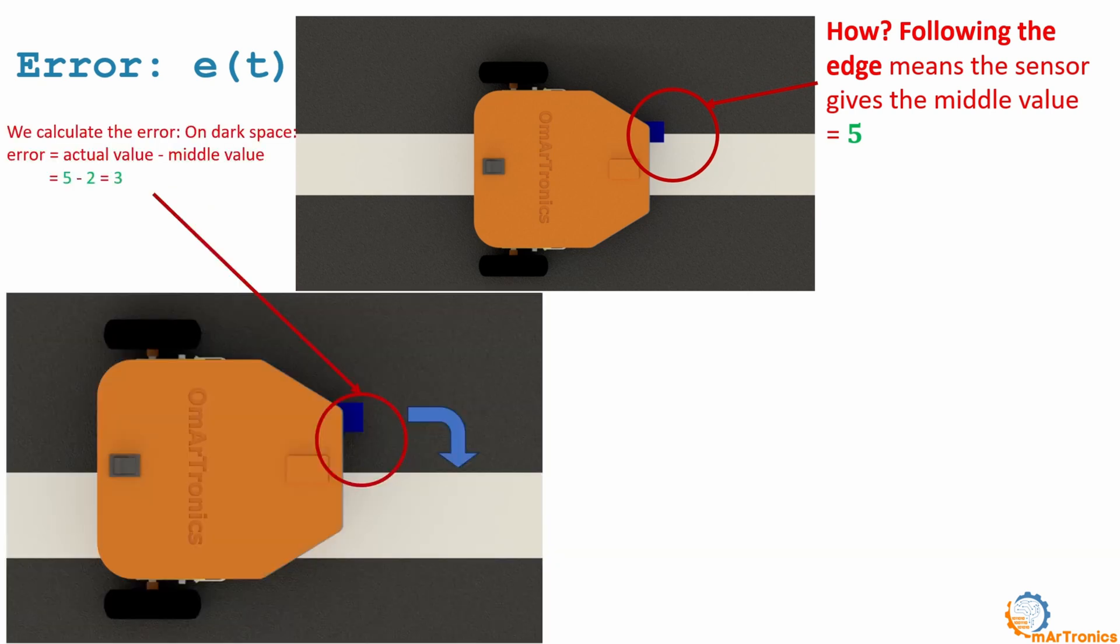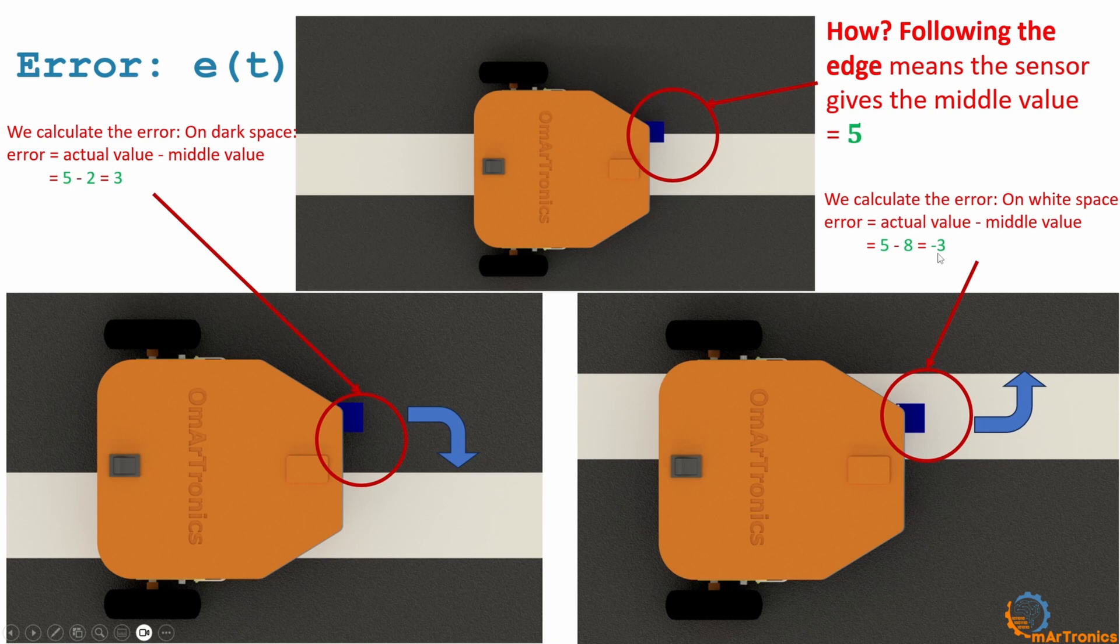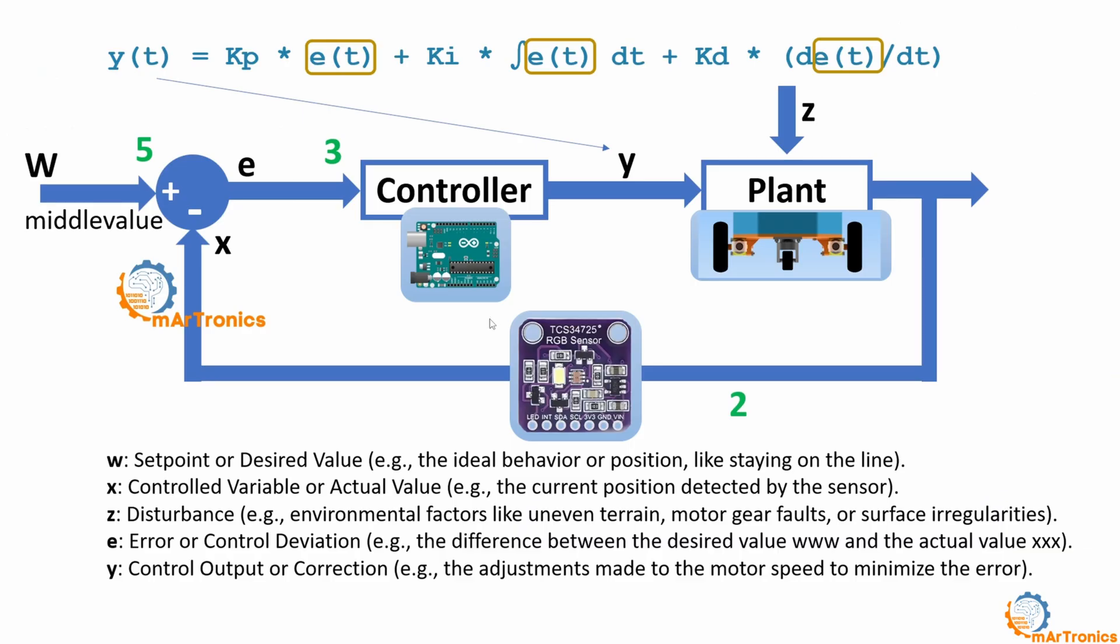Now we will calculate the error. If the robot or sensor is in the dark place, this means that the error is equal to 3. If the robot is in the light area, the error is equal to minus 3. Every time, we subtract the measured value from the average value or the desired value we always want to obtain to ensure we follow the line. So how do we use these values? The error value in the dark place and the error value in the light place, as well as the average value, to follow the line well.